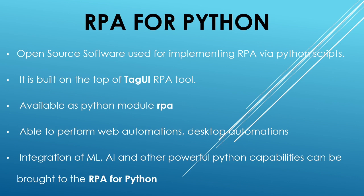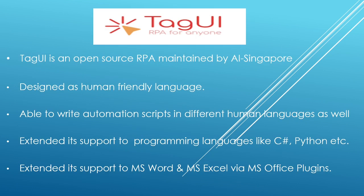So that's a small introduction about what is RPA for Python. Next let's move on to tagUI. I already told you that RPA for Python is built on top of tagUI, or in other words tagUI plus Python gives RPA for Python. tagUI is an open source RPA tool which is maintained by AI Singapore. I would say tagUI is one of the human-friendly design languages because any person with no coding knowledge can write tagUI script - it is designed in such a way.